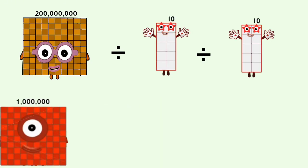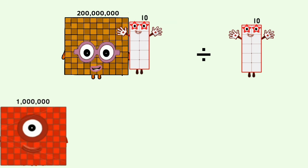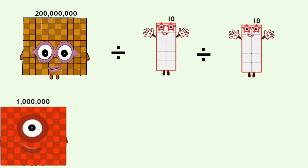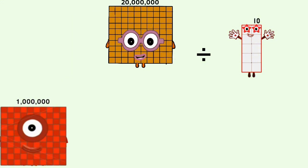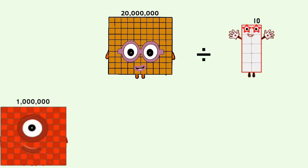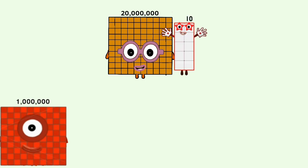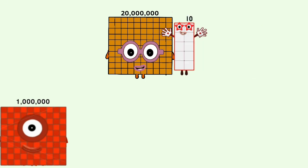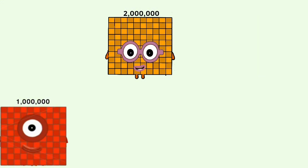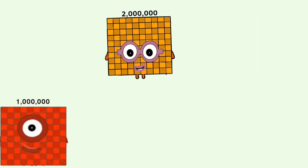200,000,000 divided by 10 equals 20,000,000. 20,000,000 divided by 10 equals 2,000,000.